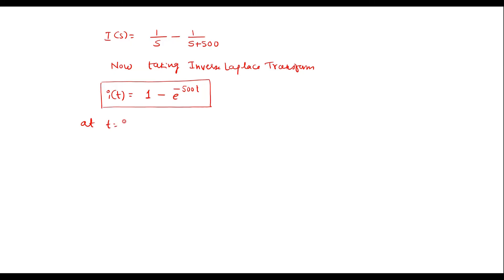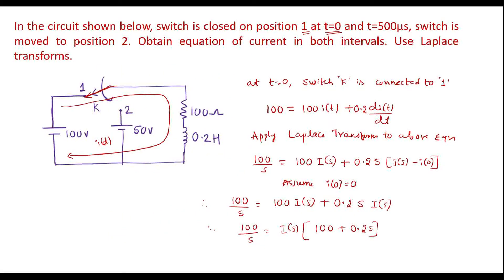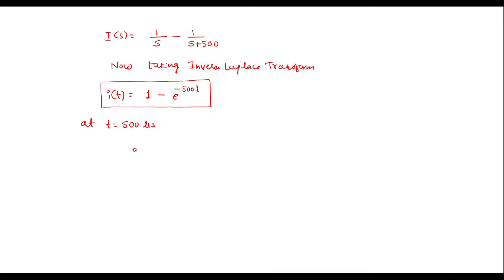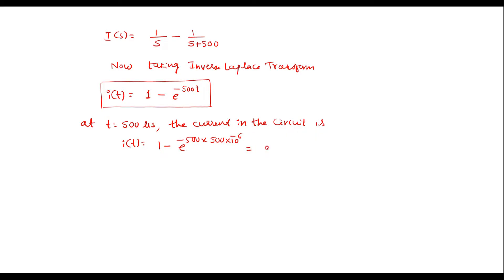In the numerical, it is given that at t equal to 500 microseconds the switch is moved to position 2. Using our current expression, i(t) = 1 - e^(-500t), with t = 500 microseconds (500 × 10^-6), simplifying this gives i = 0.221 amps.